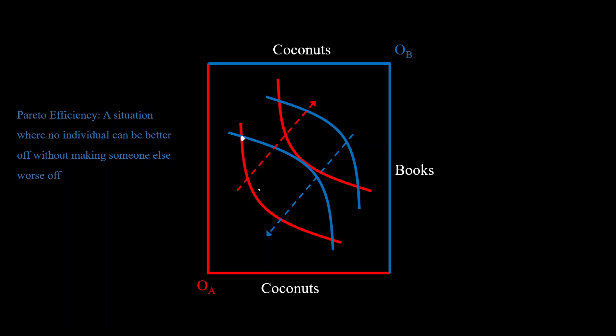What if we have an indifference curve for A over here and an indifference curve for B like this? This is for A and this is for B. In that case, A will be better off because A is getting more utility in this direction, right? And B will be better off as well because B is getting more utility in the opposite direction. So both A and B are better off. That means this point is not Pareto efficient.